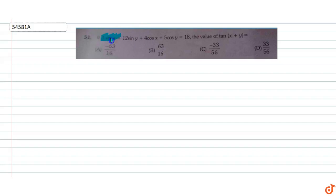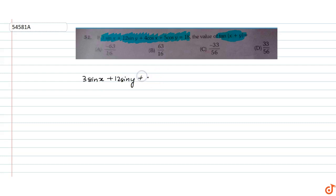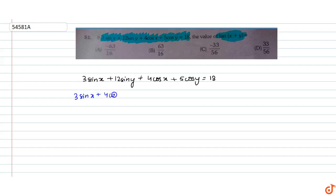The question given is: if 3sinx + 12siny + 4cosx + 5cosy = 18, then we have to find the value of tan(x+y). Rearranging x and y terms together: 3sinx + 4cosx + 12siny + 5cosy = 18.